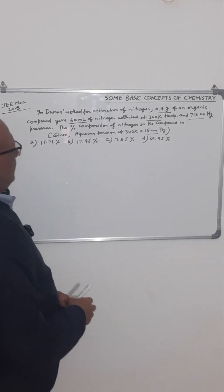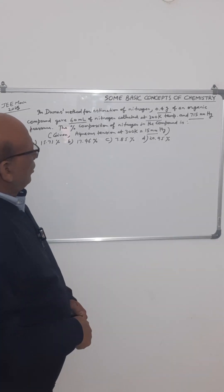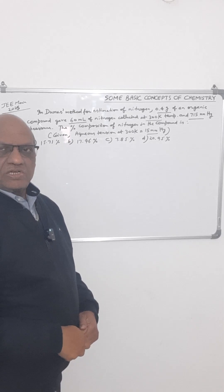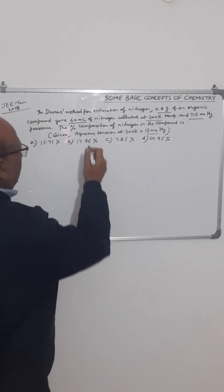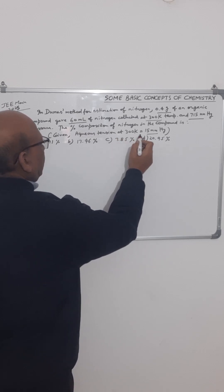So we have to find the percent composition of nitrogen. In Duma's method, this nitrogen gas is collected over water surface, so it is saturated with water vapor. That is why this aqueous tension is nothing but the vapor pressure of water at 300 Kelvin temperature.